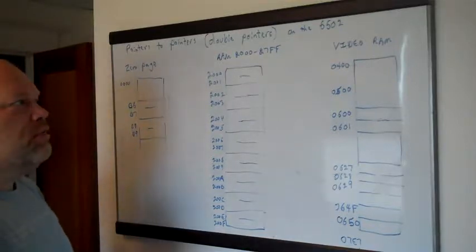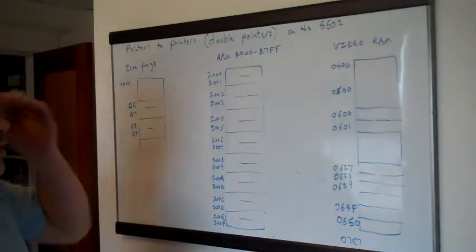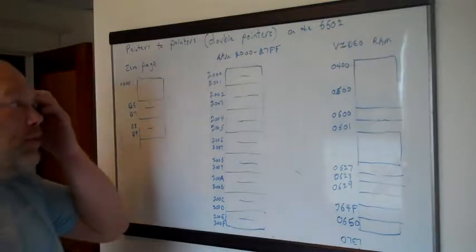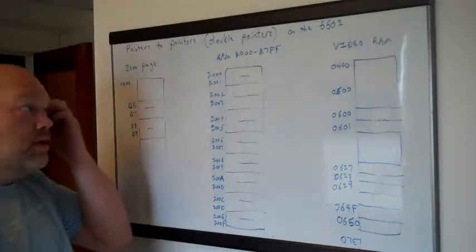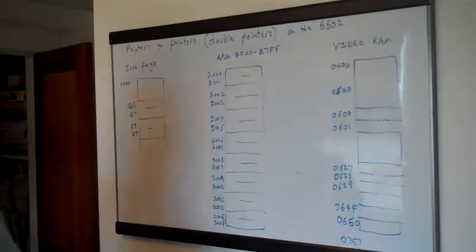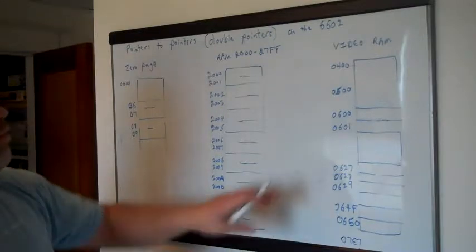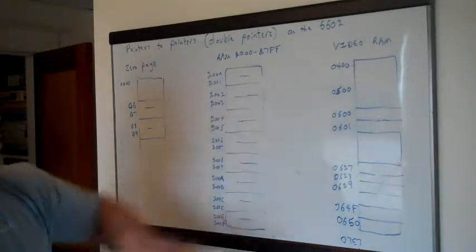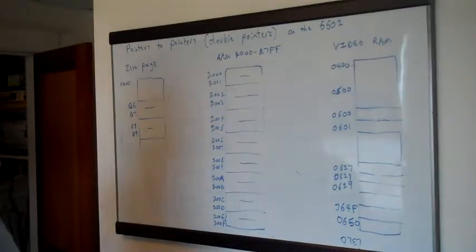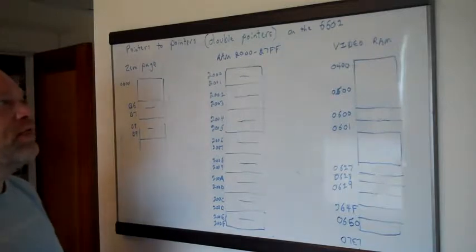Hello and welcome to 6502 assembly language programming on the Commodore 128. This would actually apply to any 6502 machine other than the particular location of the video RAM, but the concepts would translate to any other system.